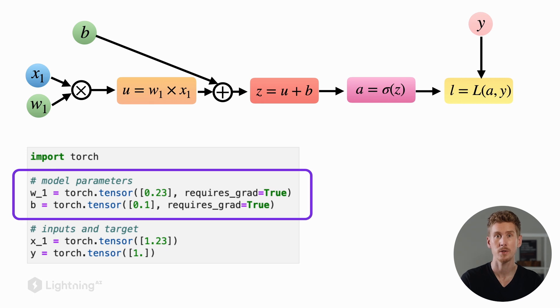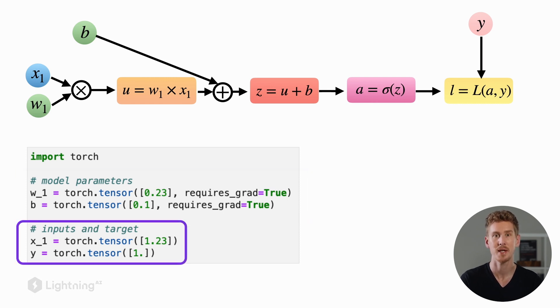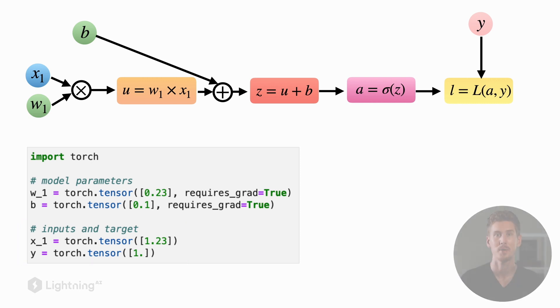Here we use torch.tensor to initialize the model parameters. Notice that we set requires_grad to true to indicate to PyTorch that we later want the gradient of the loss with respect to these parameters. Since X is an input data point from the dataset, we don't need to change it or optimize it, so we don't need to set this requires_grad argument to true. Assume that the true class label is one as shown here at the bottom.